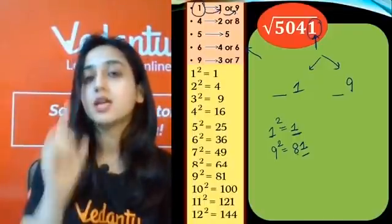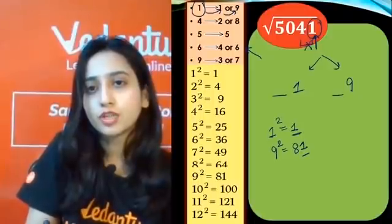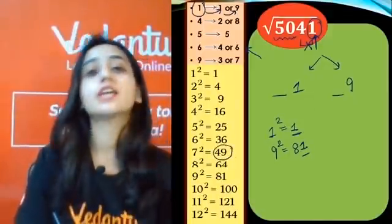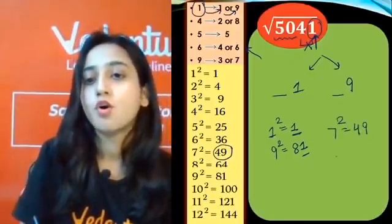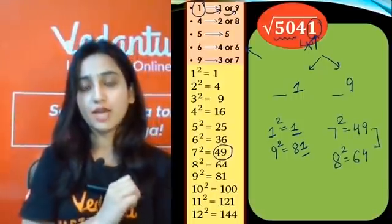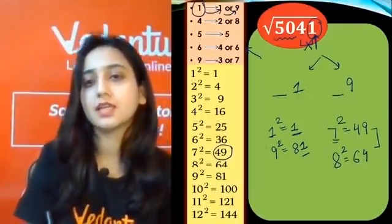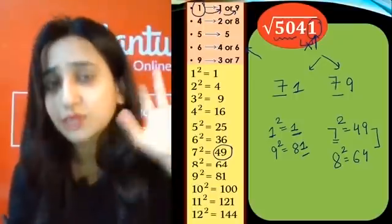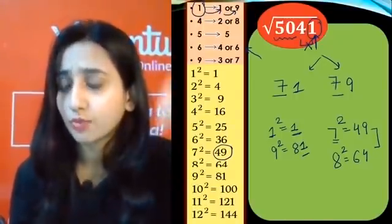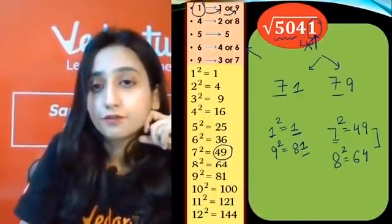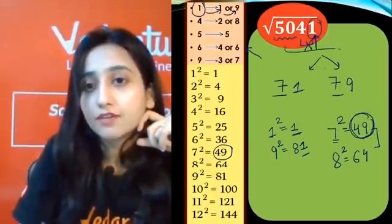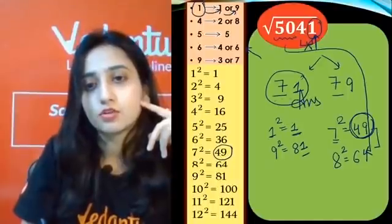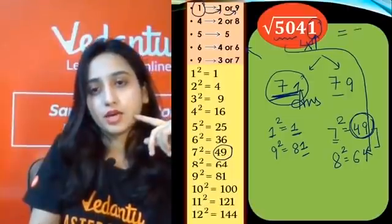For the tens place: 7 squared is 49, so it becomes approximately 49. The remaining number is 50. Since 50 lies between 49 and 64, and both possibilities give us 71 or 79, we compare: 50 is nearest to 49, which is the smaller number. So 71 is the answer. Check: square root of 5041 is 71.